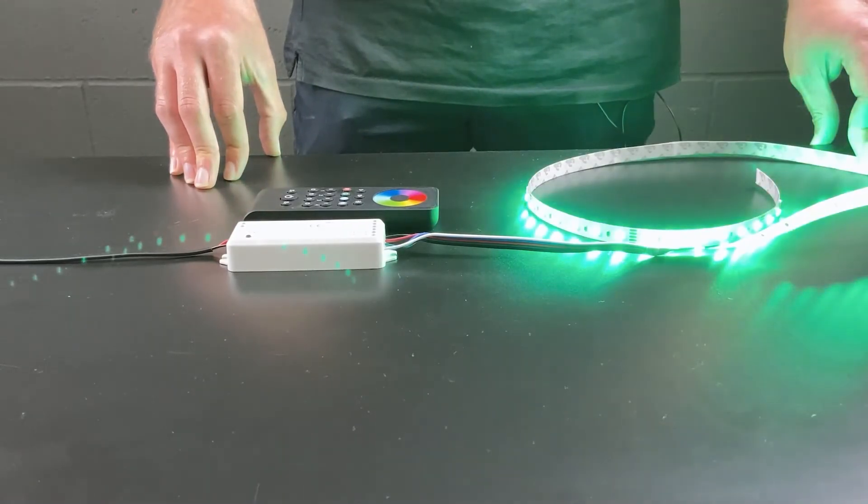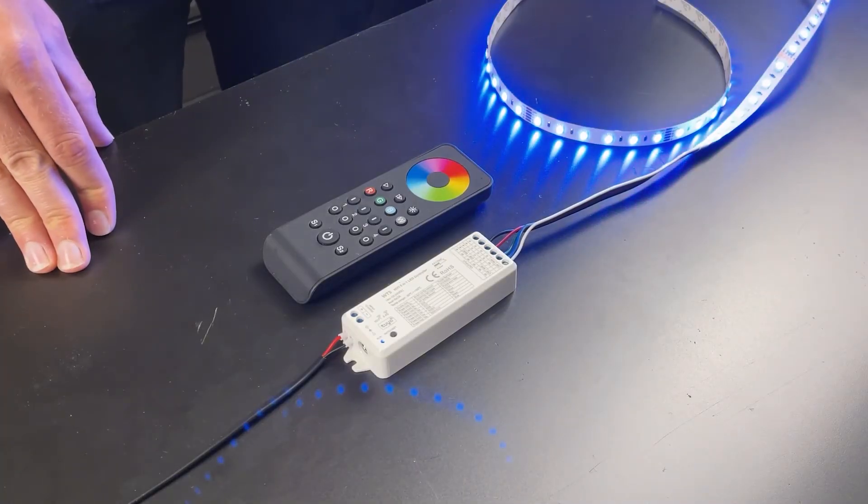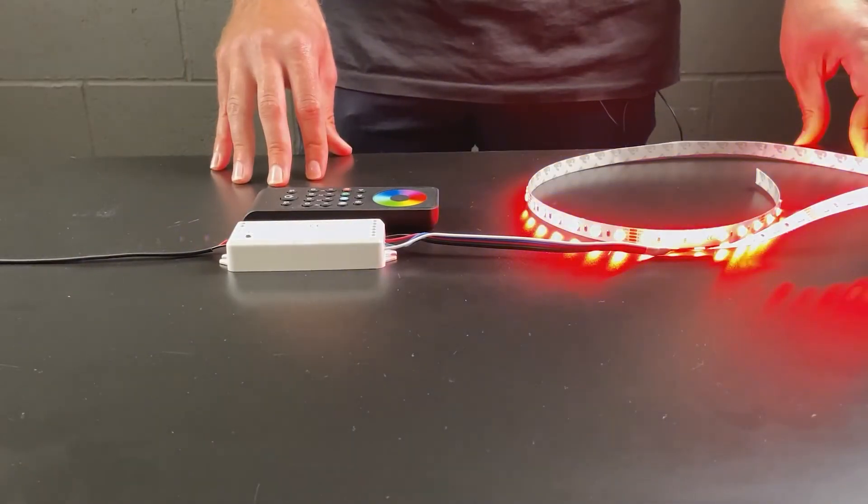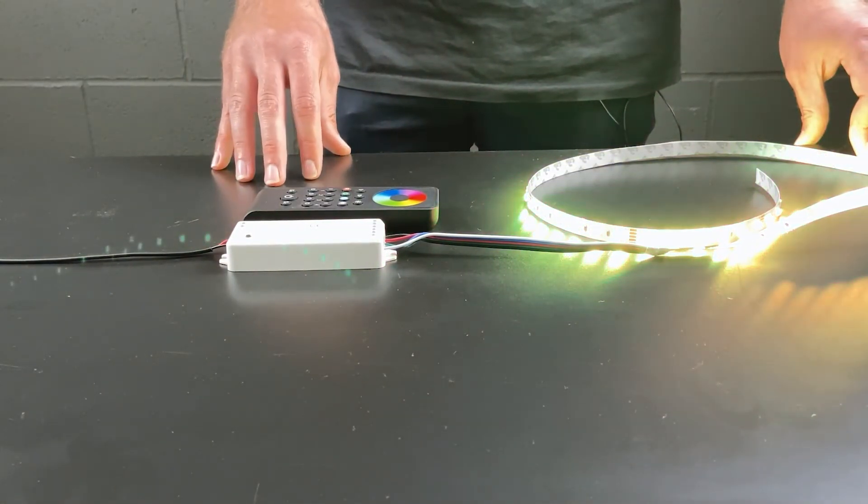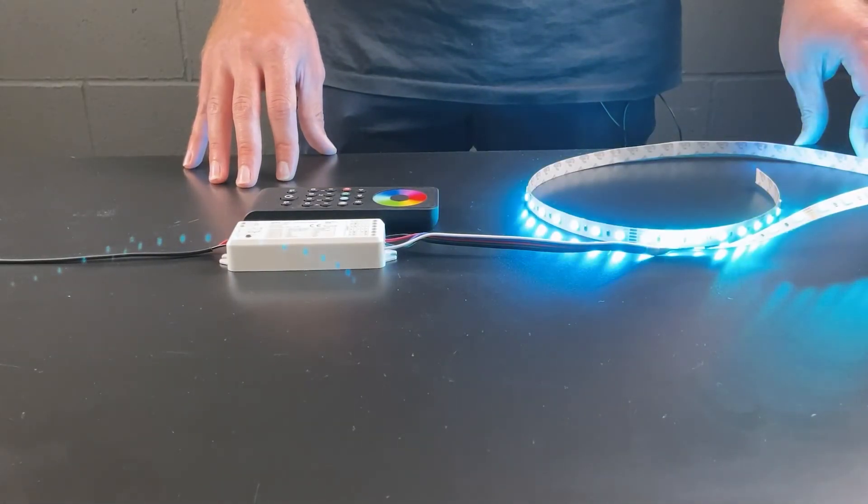The dimming for this product operates on PWM or pulse width modulation, so you will not need a dimmable driver in order to dim this product. For correct operation, you will need a 12 or 24 volt non-dimmable LED driver.